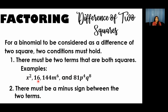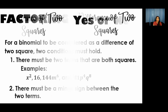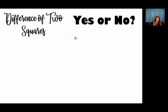Some examples of terms that are perfect squares: x squared, 16, 144m to the 6th power, and 81p to the 4th times q to the 8th power. The next condition is there must be a minus sign between the two terms. That is why it is called difference of two squares — 'difference' means subtraction. So the operation in between must be subtraction, and there should be a minus sign in between.